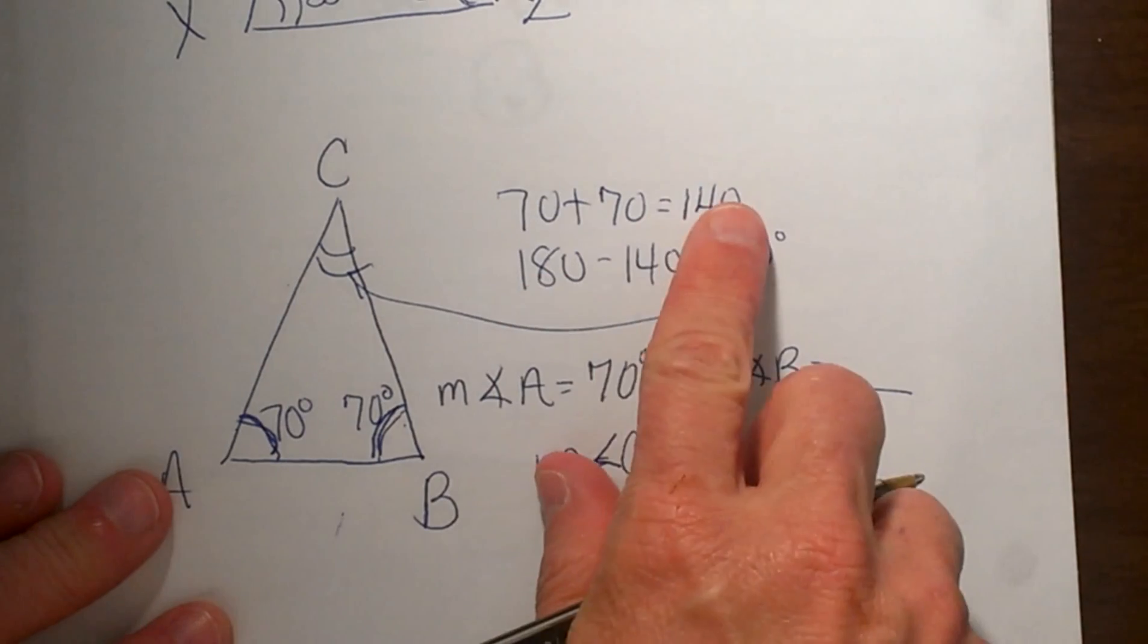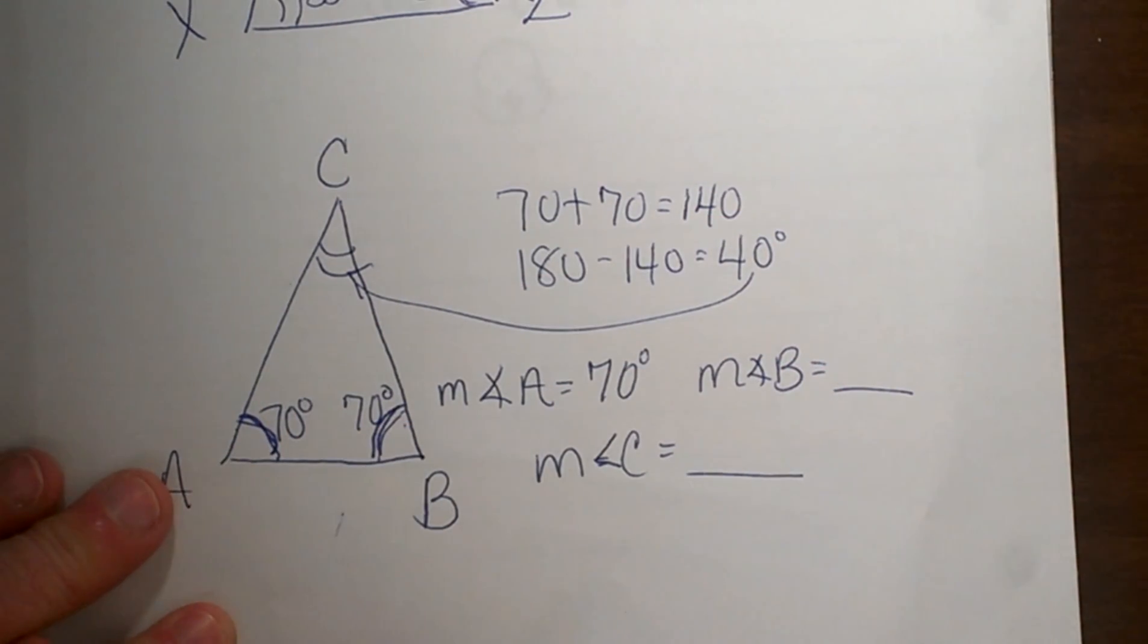So that is how we would find the vertex angle given one of the base angles. Hope this video was helpful.